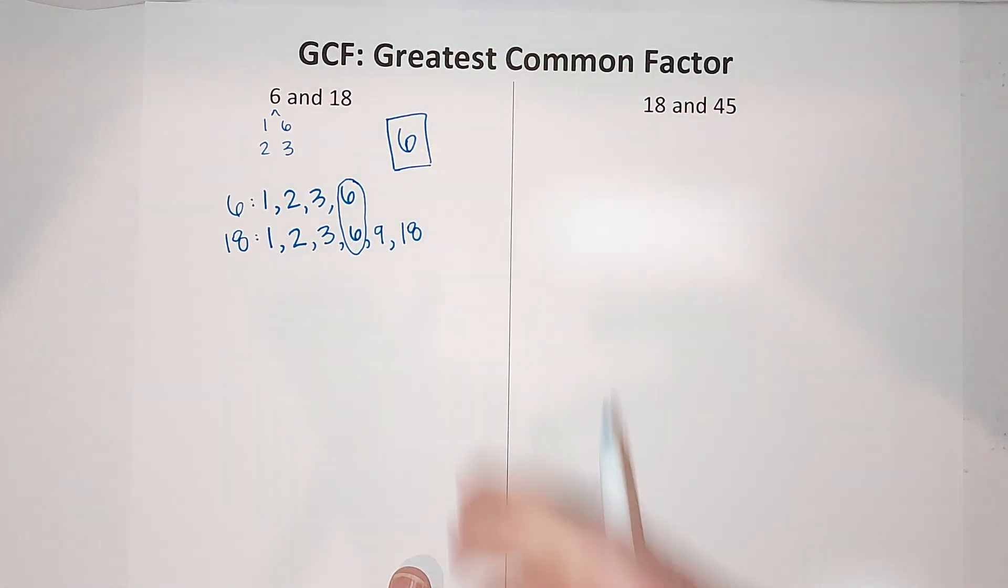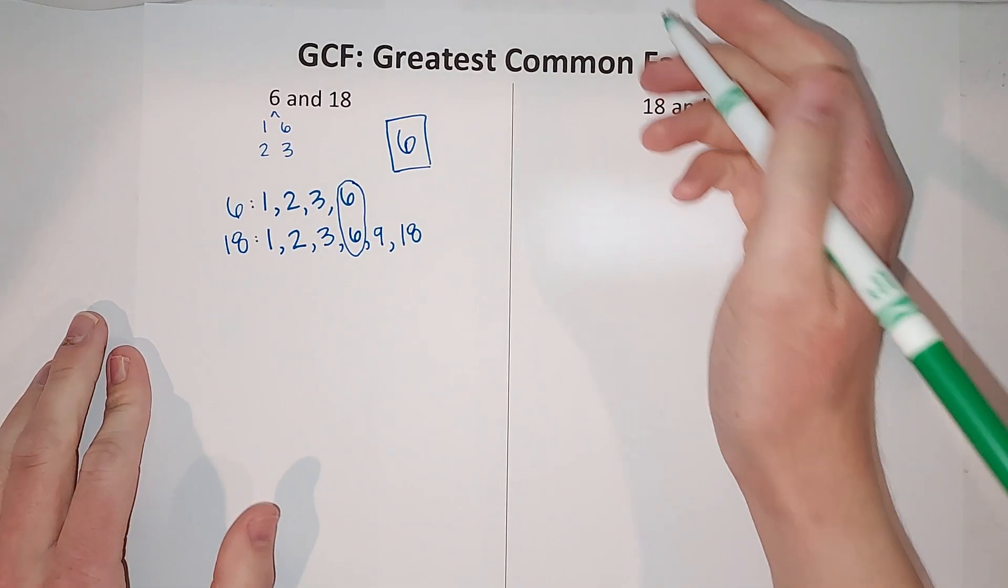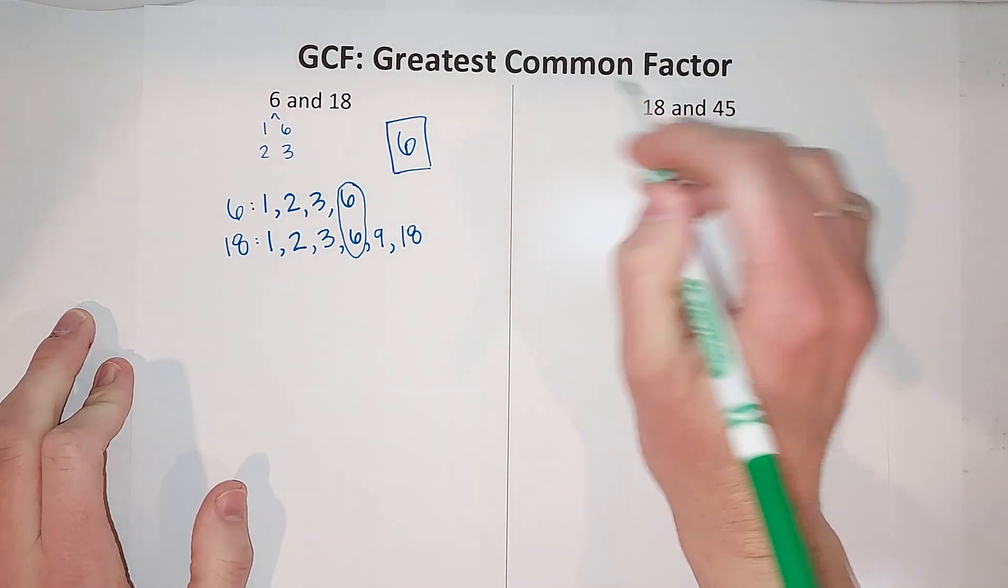So the GCF or greatest common factor for 6 and 18 is 6. If you're like 'why do I need to learn this?'—fractions. It's going to help you with fractions and you're going to love fractions, maybe.